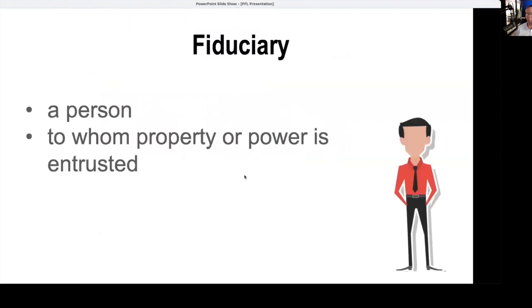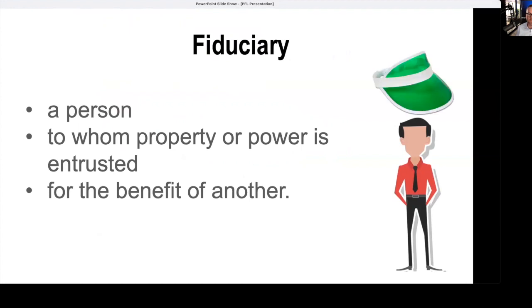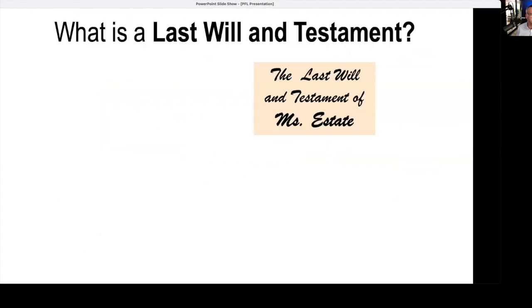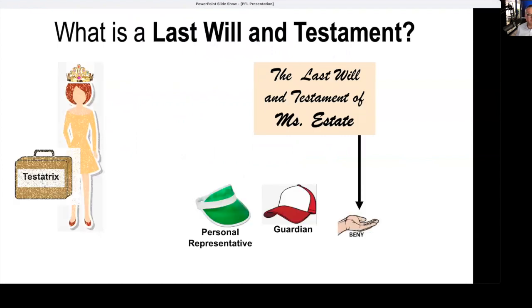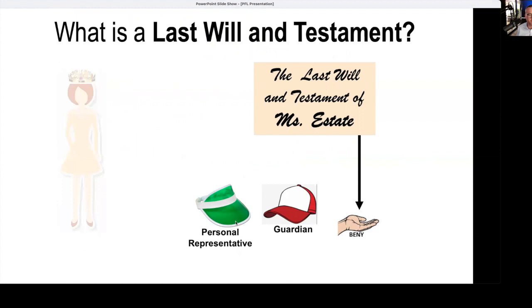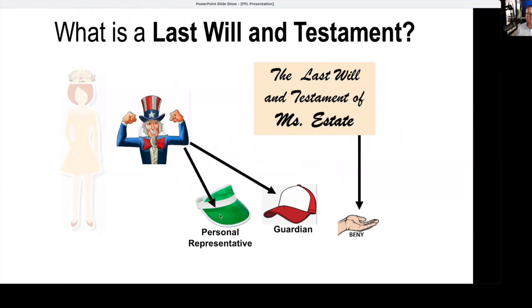A fiduciary is a person to whom property or power is entrusted for the benefit of another. A last will and testament is a document that designates a personal representative who's in charge, a guardian if there are minor children, and the beneficiaries who get the stuff. In order to activate the personal representative and the guardian and those powers, some court involvement is required.